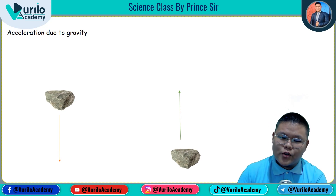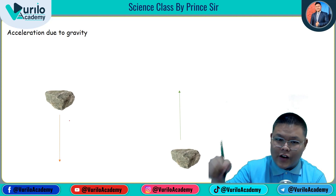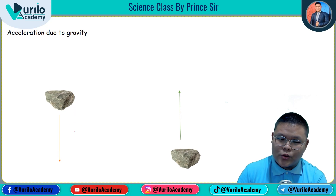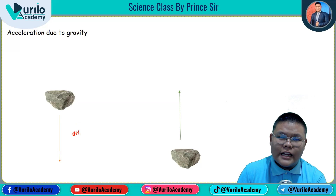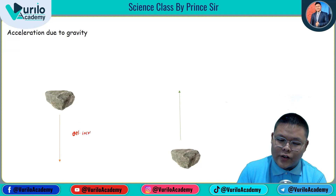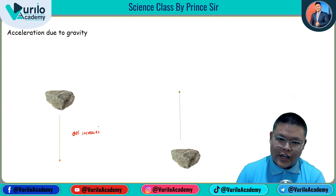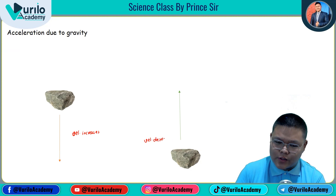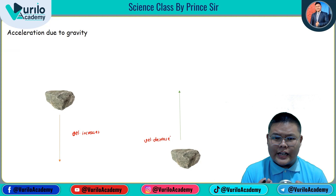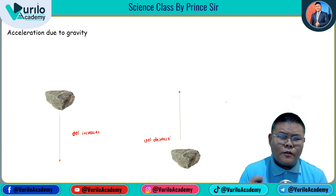When an object falls downward, the velocity increases. As it moves upward, the velocity decreases. This change in velocity is due to the effect of gravity — when moving with gravity, velocity increases, and when moving against gravity, velocity decreases.